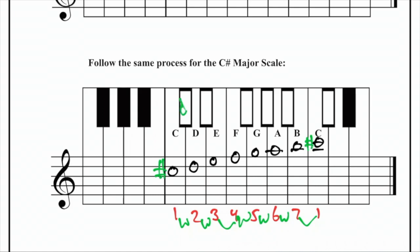C-sharp is located here, and now we begin analyzing. C-sharp to D-sharp is a whole step. Therefore, we write a sharp in front of D.